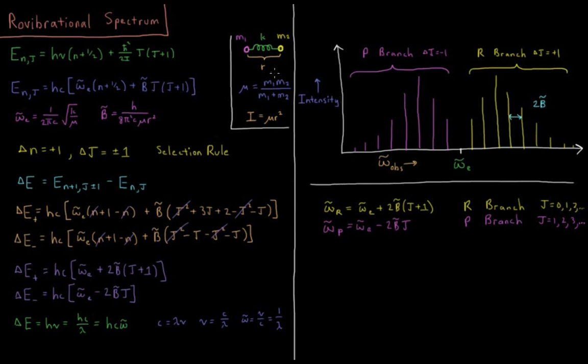In the previous video, we derived that the rovibrational energy levels in these models are going to be E of nj, quantum numbers n and j, both integers starting at zero and going up to infinity, equals h nu times n plus 1/2 plus h bar squared over 2 times moment of inertia times j times j plus 1.